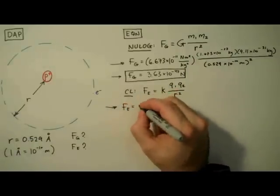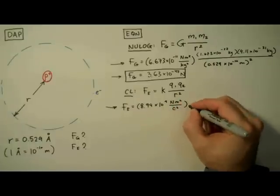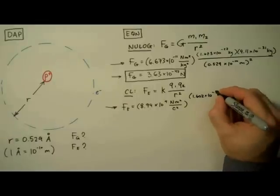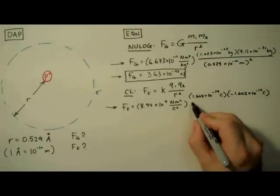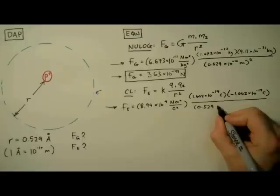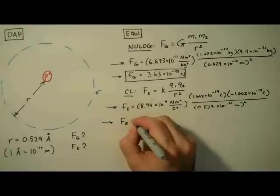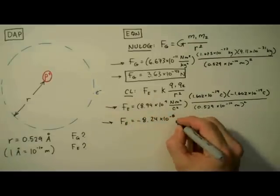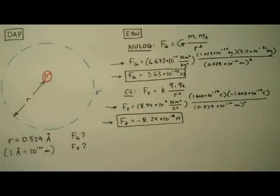Okay, so we have Fe is equal to 8.99 times 10 to the 9th, that's a positive 9, Newton meters squared per Coulomb squared, times the charge of a proton, 1.602 times 10 to the negative 19th Coulombs, times the charge of an electron, negative that same value, divided by 0.529 times 10 to the negative 10th meters squared. So we get the electric force is equal to negative 8.24 times 10 to the negative 8th newtons. Negative? What does this negative sign mean? This negative sign tells us that it's an attractive force. If it were positive, it would be repulsive. You see, the electric force, unlike the gravitational force, can be either.